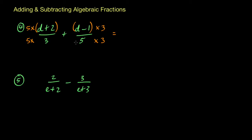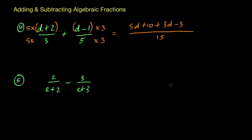Expanding this out, we have a common denominator of 15 straight away. Over here we've got 5 times d which is 5d, and 5 times 2 is plus 10. Then we have plus 3 times d which is 3d, and 3 times minus 1 which is minus 3. Now we can collect like terms: 5d plus 3d gives 8d, and plus 10 take away 3 gives plus 7. That's all over 15 — so your final answer is 8d plus 7 all over 15.